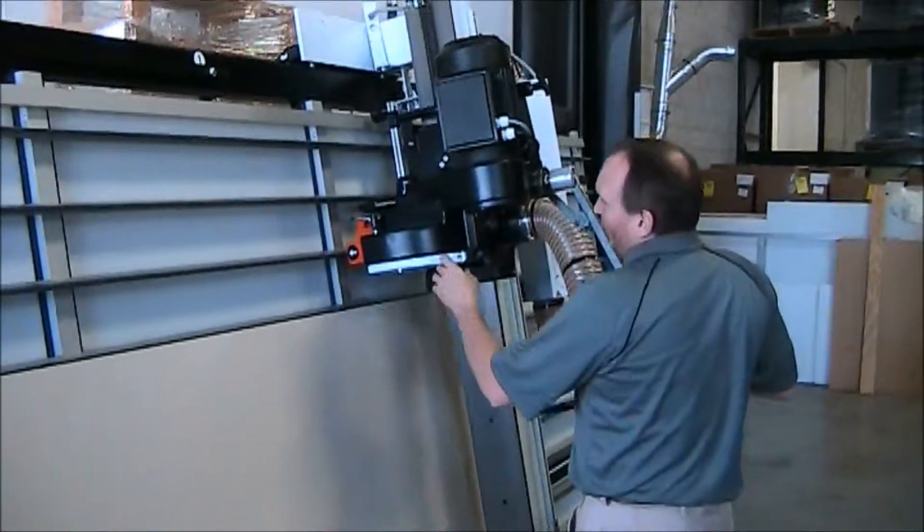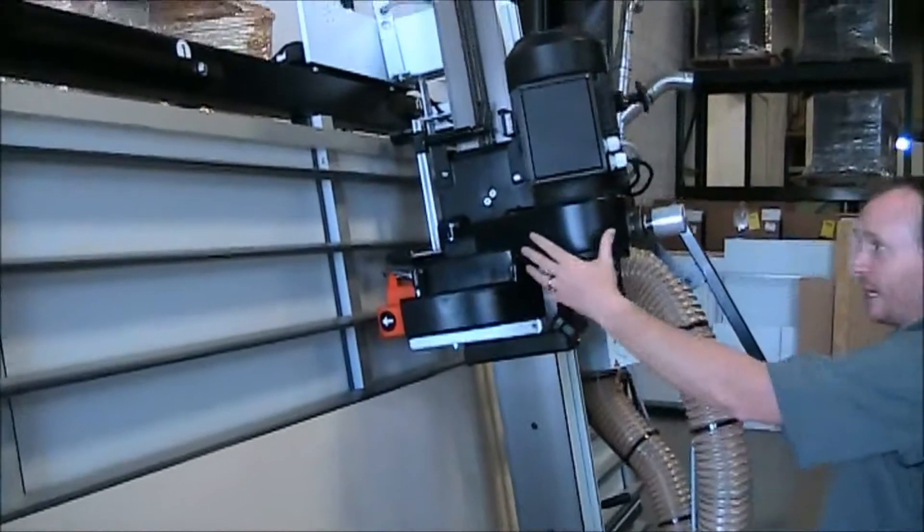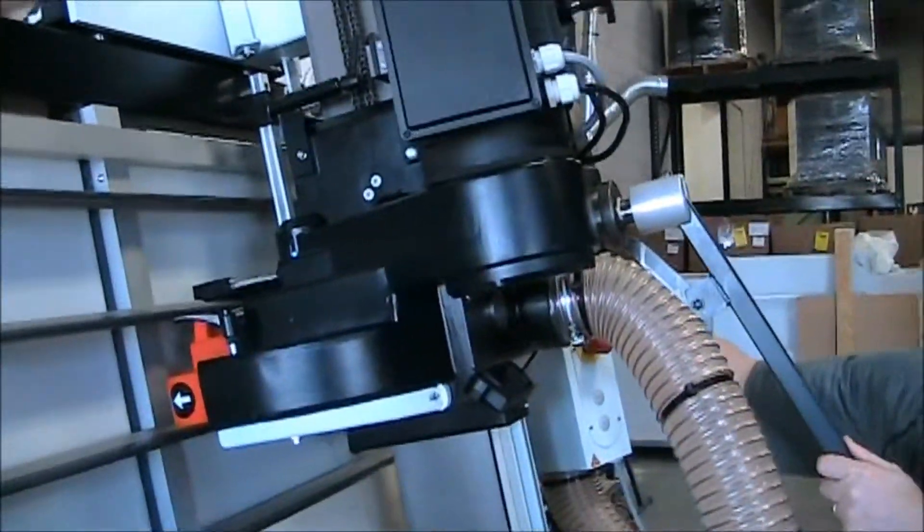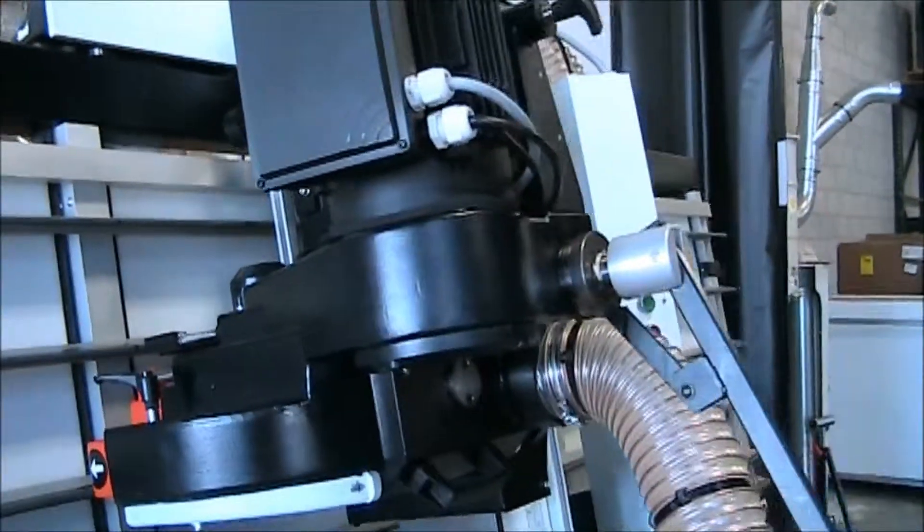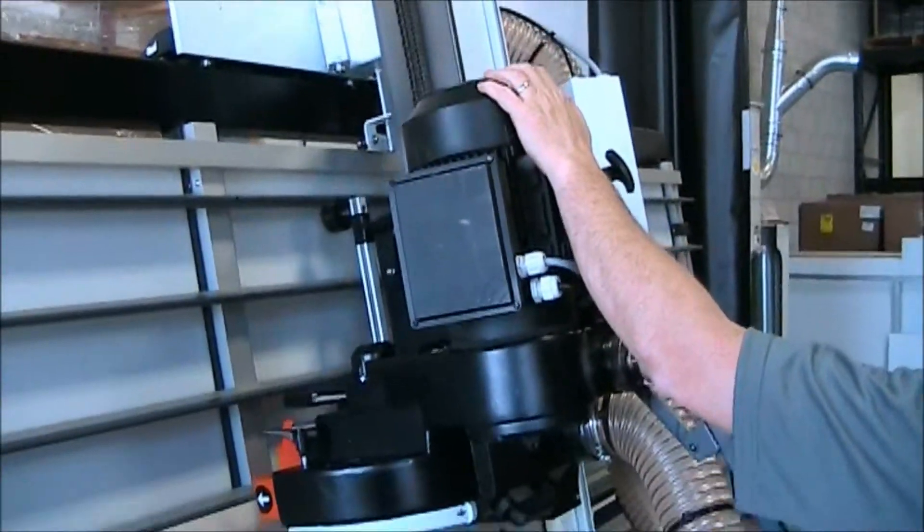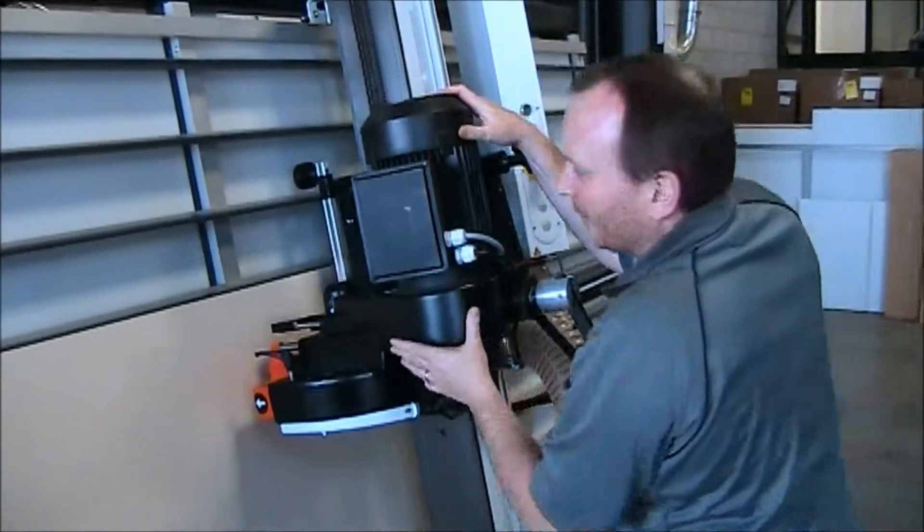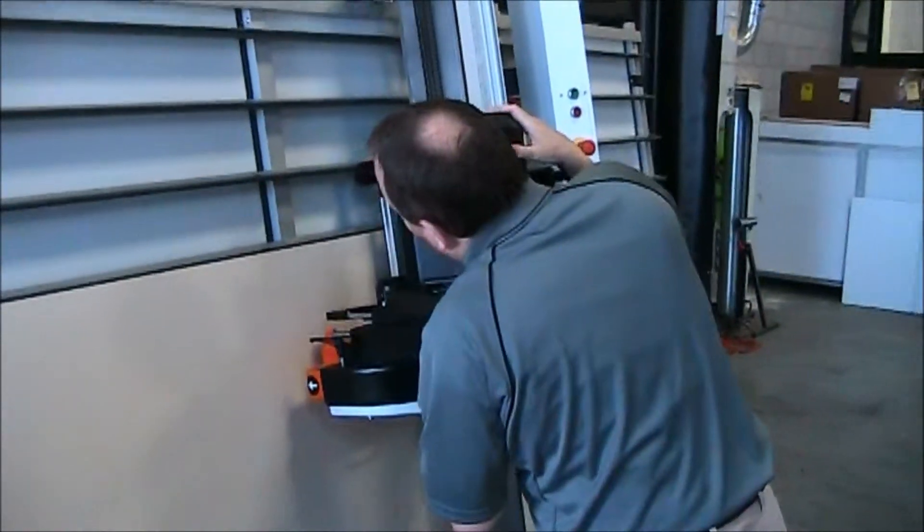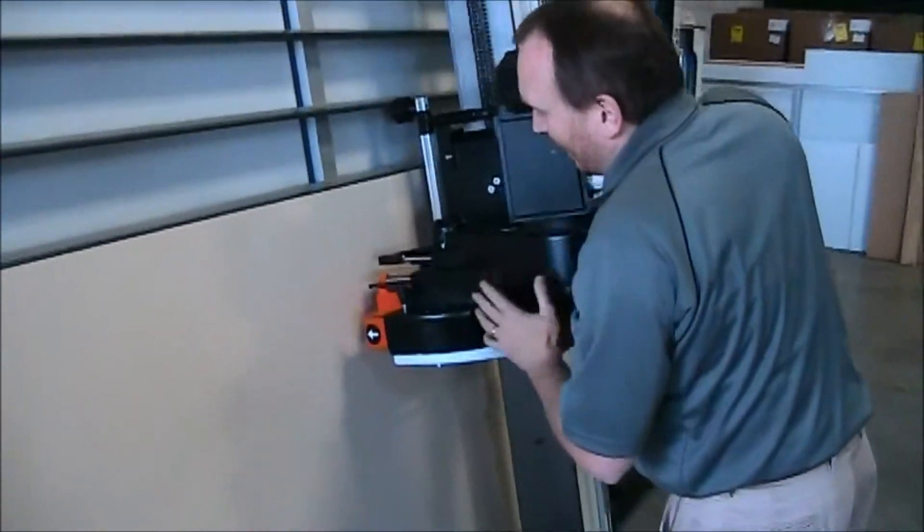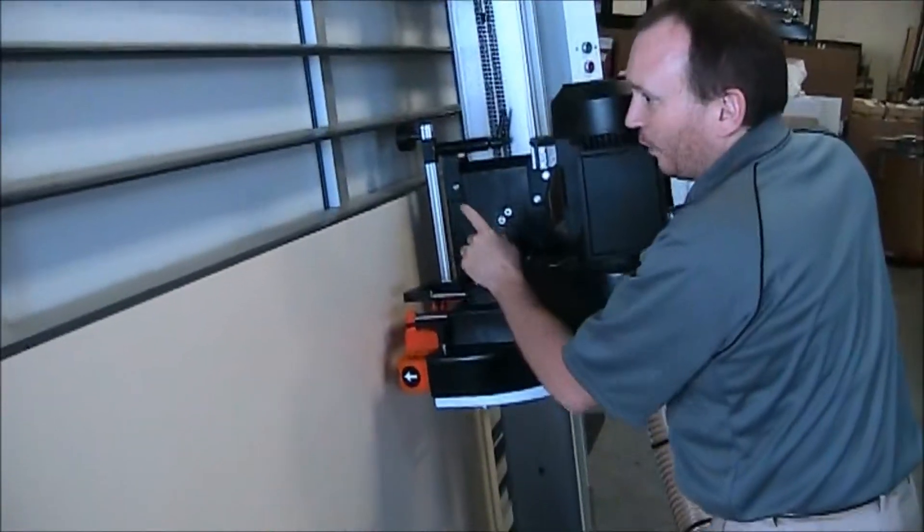As we zoom in here a little bit more, I'm going to show you a couple things. I'm going to unlock my head over here. Now as you can see, I've got a tape measure on this side which we'll address in a minute. But as you come down, you can see I can set my head anywhere I want to make that cut.